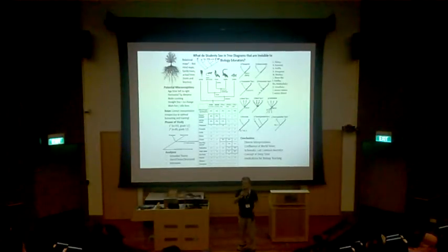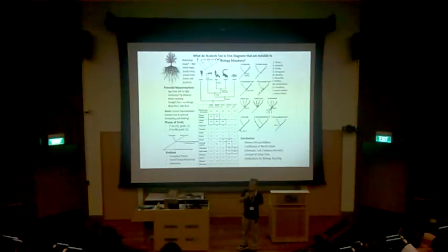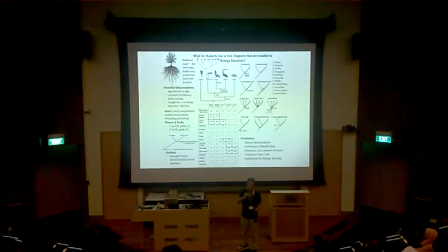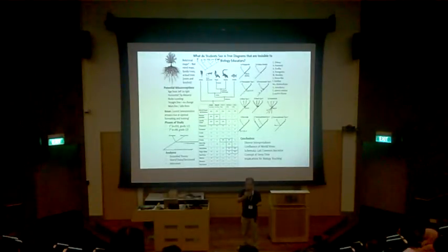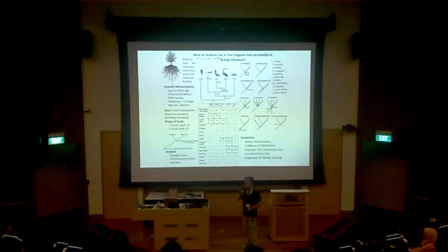And we cannot blame them, because there's very huge issues with even the terms like last common ancestor. What's last? Is it previous? Is it most recent? What does it actually mean? Common? What does it mean? Is it a common person? Or is it a common character? What is the common that we are talking about? So we cannot blame them.